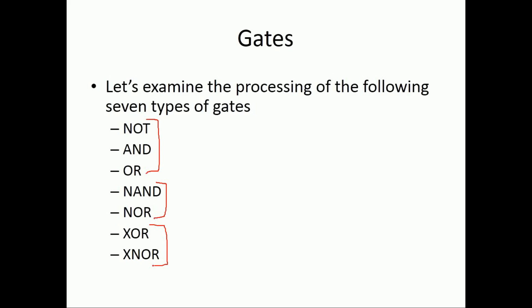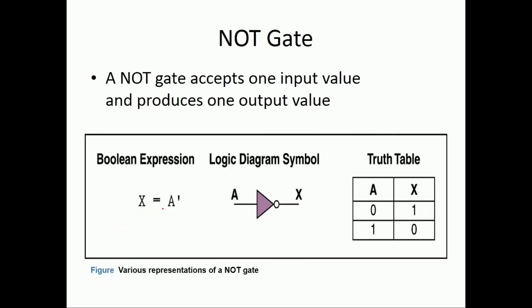Let us first start with the basic gates. First is the NOT gate. NOT gate is the only gate in which only one input is allowed — minimum number of inputs is 1, and maximum is also 1. The Boolean expression is represented as A-dash or A-bar. The logic symbol has input A and output A-bar, which is X.